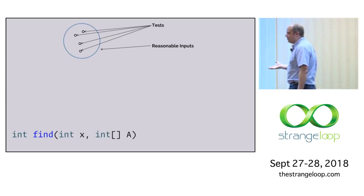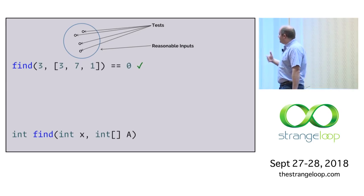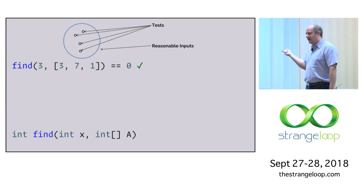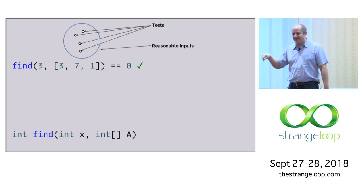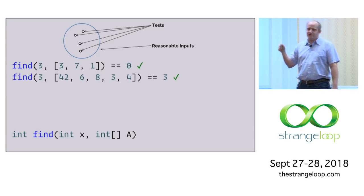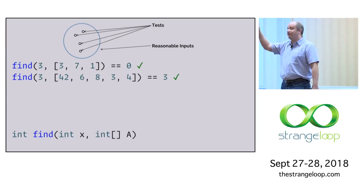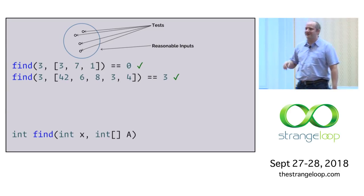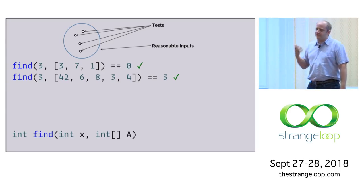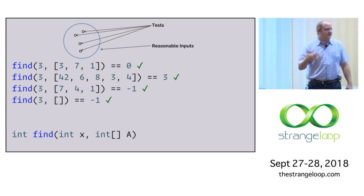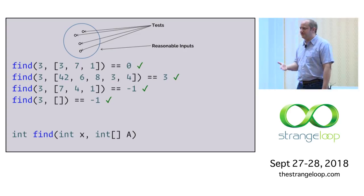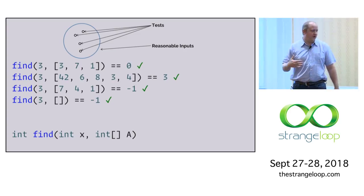We're going to write some tests. What we're going to say is this should return the index where the integer is found. So if 3 is at index 0, return 0. If 3 is the fourth thing in the array, we're going to return 3. And then we also need some tests where we don't find 3 anywhere in the array, and the standard thing to do in these situations seems to be to return negative 1.